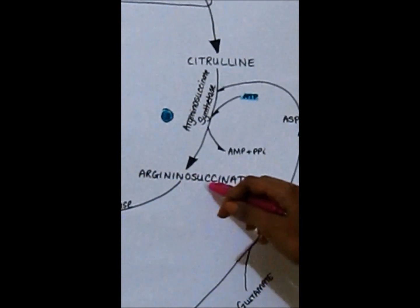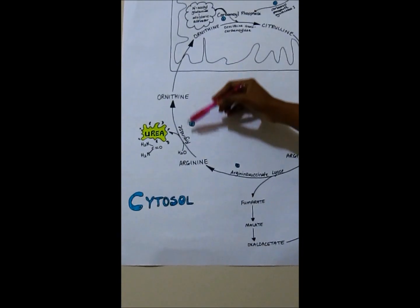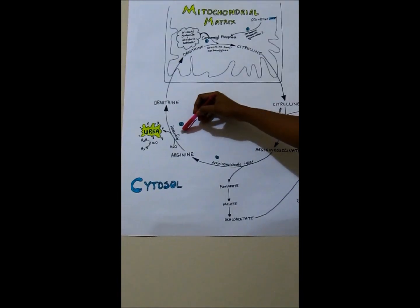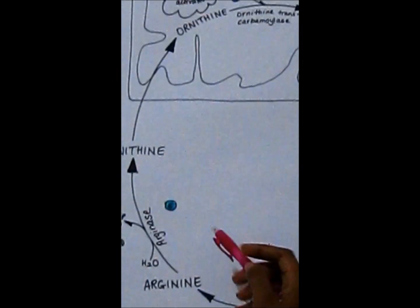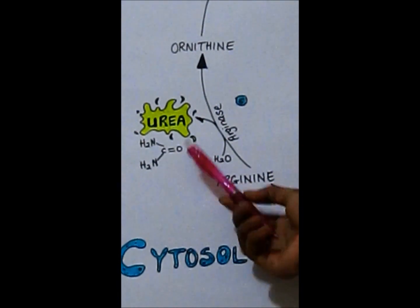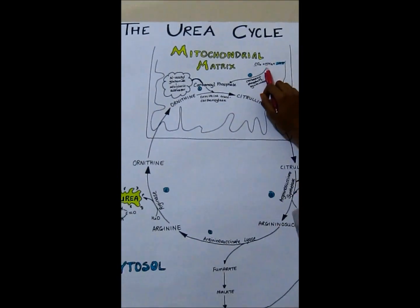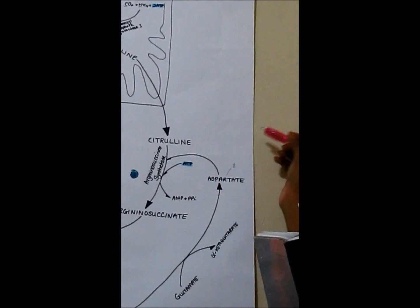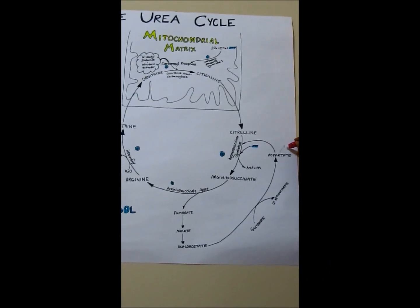Argininosuccinate forms arginine via argininosuccinate lyase. In this reaction, fumarate is formed, which is converted to malate, then oxaloacetate, which is converted to aspartate. This goes back into the reaction where citrulline is converted to argininosuccinate, which uses ATP to form AMP plus PPi. From the structure of urea, it is made up of two nitrogen molecules and a carbon. The carbon comes from carbon dioxide; the first nitrogen comes from free ammonia; the second comes from aspartate.